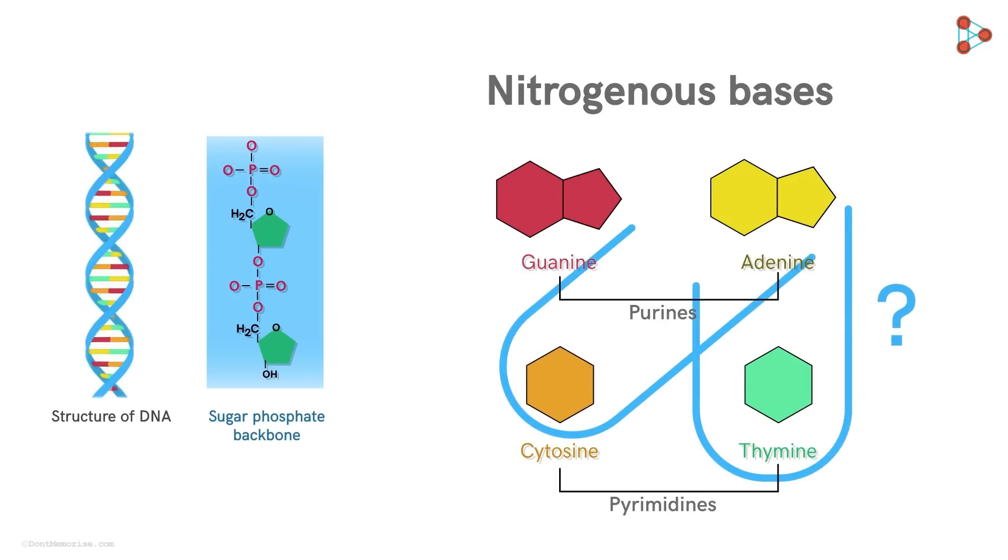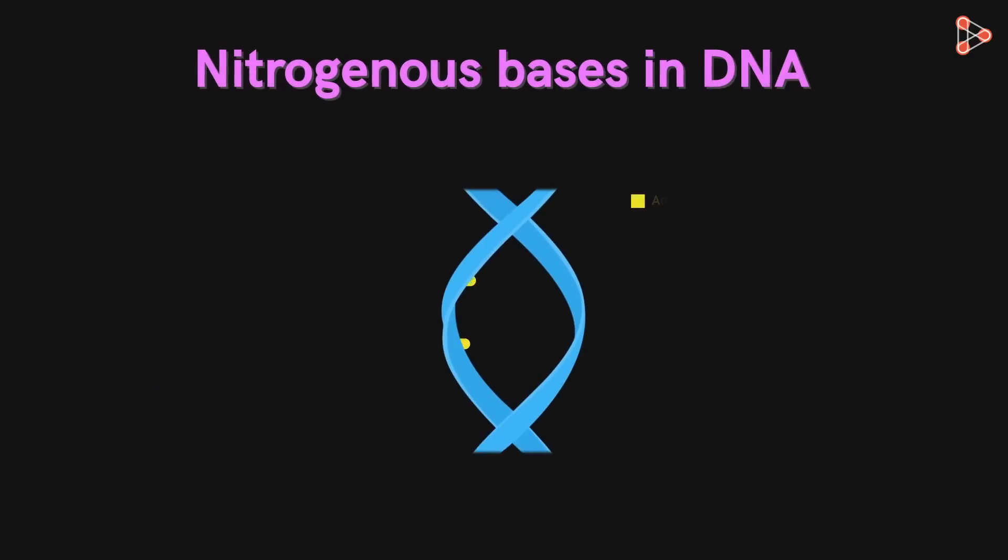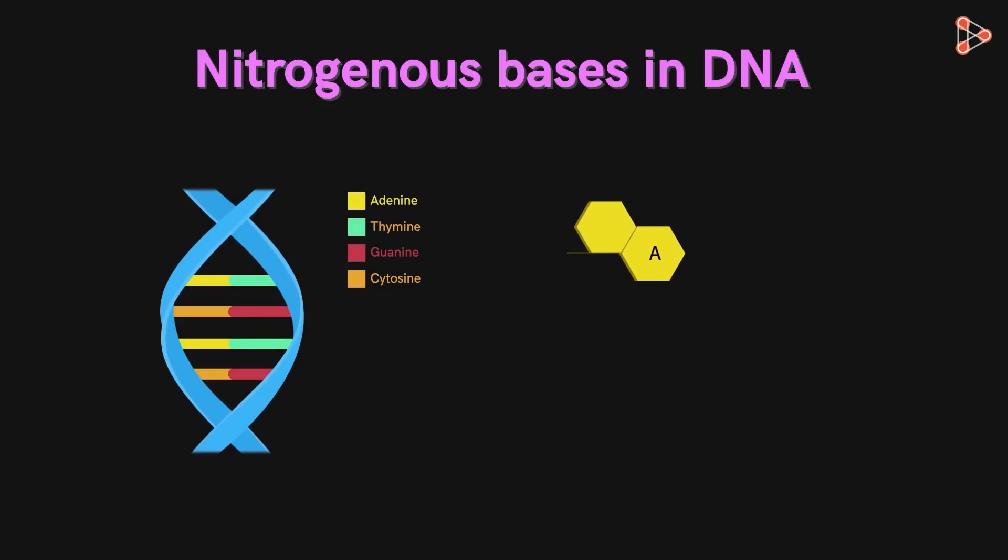Can any Purine bind with any Pyrimidine? No! It is a thumb rule that Adenine always binds with Thymine while Guanine binds with Cytosine only. These molecules are bound to each other with the help of Hydrogen bonds. Adenine binds with Thymine with the help of two Hydrogen bonds.